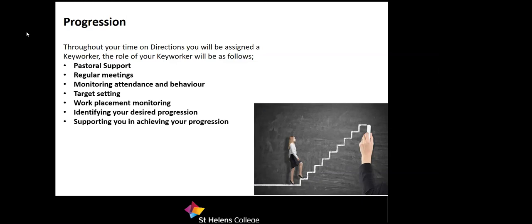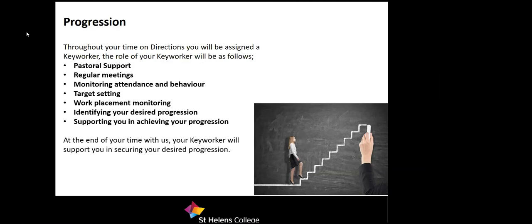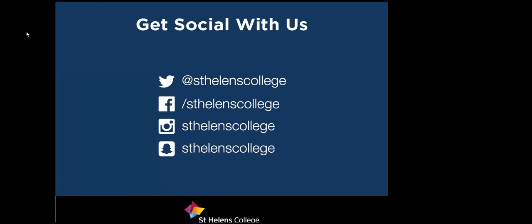Your key worker is there to deal with anything you have issues with outside the classroom. Anything that goes on academically, your tutor will deal with; your key worker will deal with the rest of it. At the end of your time, your key worker will support you in securing your desired progression. So you'll go to your key worker and say you've worked hard all year and met all your targets, and they'll contact, for example, animal care, arrange your interview, and the progression will take place from there. Now I'll open the floor for questions.